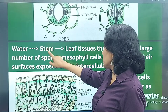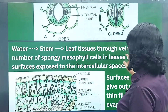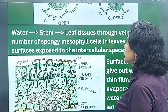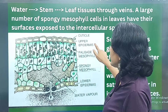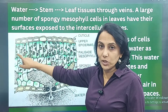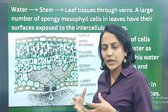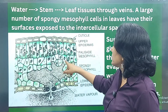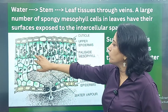Water from the root goes to the stem and to the leaf tissues through the veins via the xylem. A large number of spongy mesophyll cells in the leaves have their surfaces exposed to intercellular spaces. The leaf structure from top to bottom includes: the cuticle, upper epidermis, palisade mesophyll cells which are tall and rectangular, and then the spongy mesophyll which has many intercellular spaces.